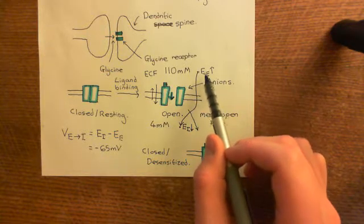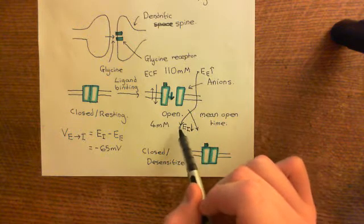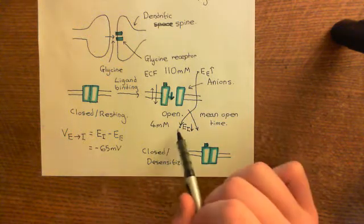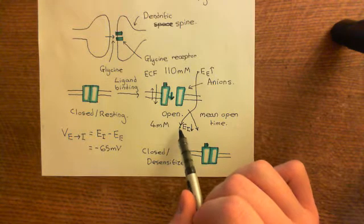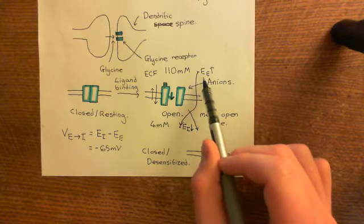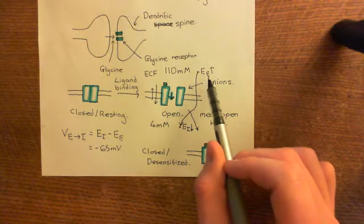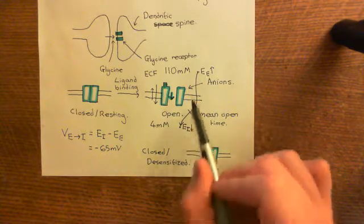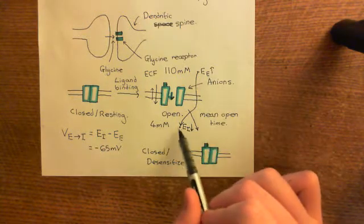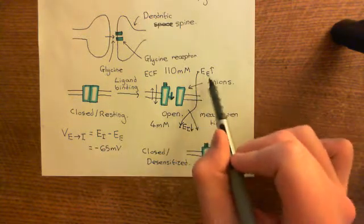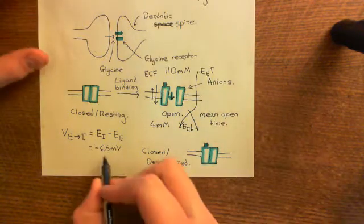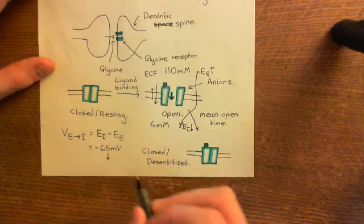Originally, the electrical potential difference from extracellular to intracellular was negative 65 millivolts. So initially, the intracellular electrical potential was lower than the extracellular electrical potential by 65 millivolts. However, we've now made the intracellular number smaller and the extracellular number bigger, so this number is going to become more negative.